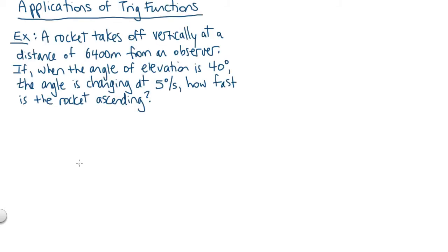In this video we're going to look at applications of trig functions. Let's start by reading through the question. A rocket takes off vertically at a distance of 6,400 meters from an observer. If when the angle of elevation is 40 degrees, the angle is changing at 5 degrees per second, how fast is the rocket ascending?